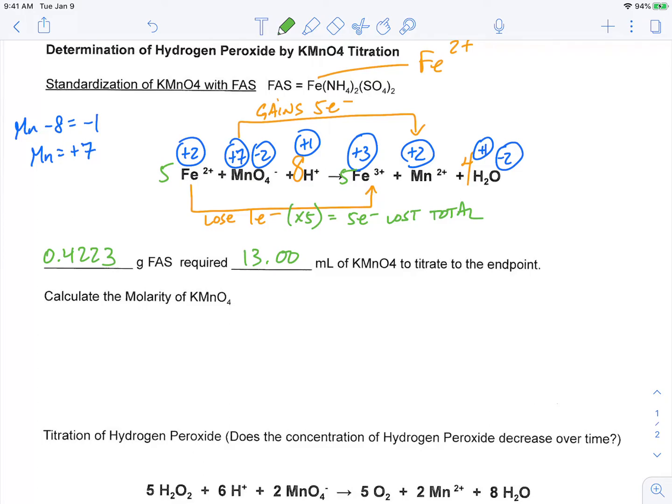Now, what we know based upon the amount of FAS, using the molar mass, I can figure out how many moles of FAS that we used. And then knowing the relationship between the iron, which is in the FAS, and the permanganate, using that molar ratio, I can figure out how many moles of permanganate were in my 13 milliliters and then calculate our molarity. So let's go ahead and do that.